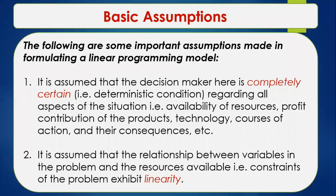The first assumption is that the decision maker is completely certain — meaning they are in a deterministic condition regarding all aspects: availability of resources, profit contributions of products, technology, machinery and equipment used, and courses of action taken under consequences. The second assumption is that the relationship between variables and constraints exhibits linearity, which implies proportionality and additivity. This simplifies modeling of the problem.